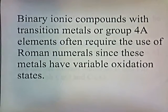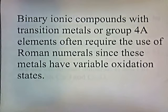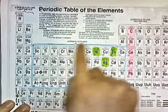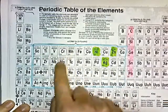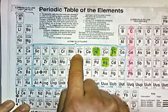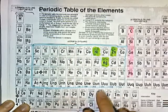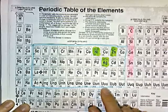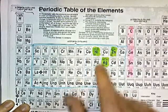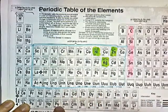Binary ionic compounds with transition metals or group 4 elements often require the use of Roman numerals since these metals have variable oxidation states. Looking at the periodic chart, the transition elements tend to have variable oxidation states — for example, iron is either plus two or plus three. A few exceptions have constant oxidation states: nickel, silver, and zinc.